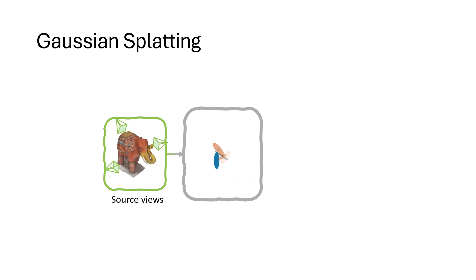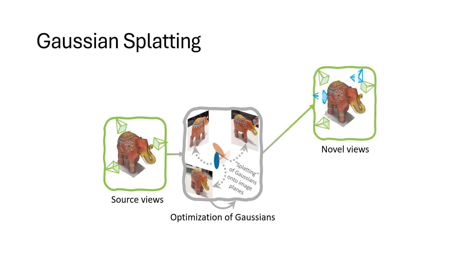These Gaussians are then projected back to the training image planes and optimized using a photometric loss against the ground truth images.